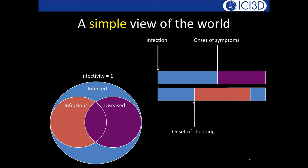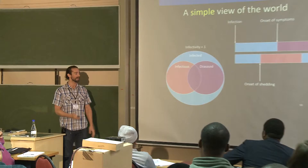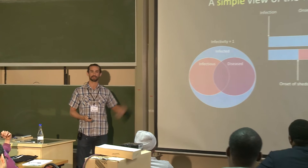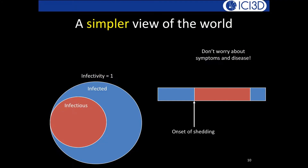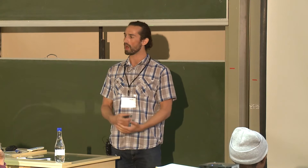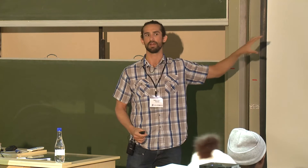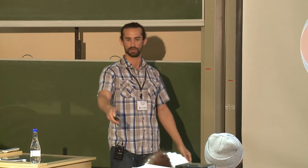The first simplification: we assume that exposures always result in infection — infectivity equals one. We're also going to ignore symptoms and disease for now, since it's the infectiousness itself that spreads infection. When modeling spread of diseases, we focus on the infectious period rather than the clinical disease period.